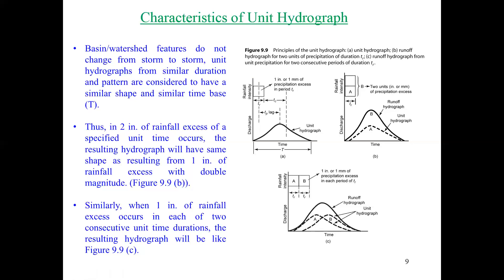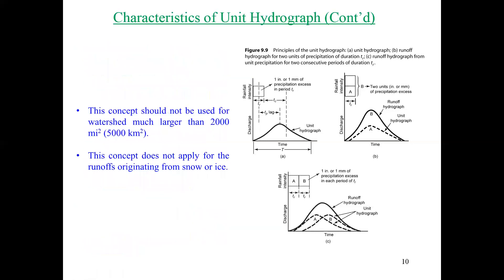The unit hydrograph has some limitations. It should not be used for watersheds larger than about 2,000 square miles or 5,000 square kilometers. This concept also does not apply to runoff originating from snow or ice, though the Army Corps of Engineers does use the method for snow and ice runoff. That concludes the second part of Lecture 30.